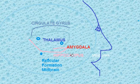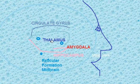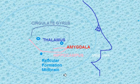To summarize: you have the hippocampus, the cingulate gyrus, some nuclei of the thalamus, some nuclei of the hypothalamus, the caudate nucleus, the septal nucleus, the amygdala, and the reticular formation of the midbrain. These constitute the limbic system.